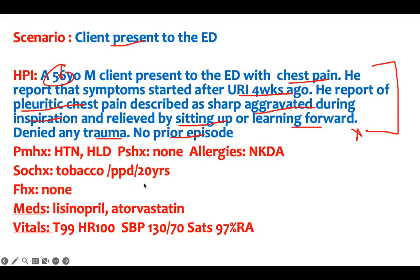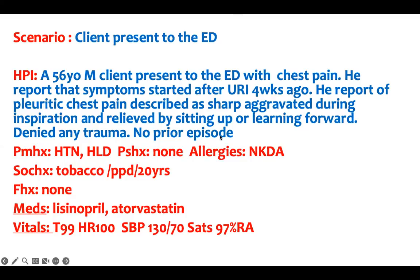No known allergies. He smoked for 20 years and is on appropriate medication. Heart rate is elevated, temperature slightly elevated, blood pressure normal, O2 sat 97%. You should be able to make an educated guess — pain worse with breathing and relieved by leaning forward.